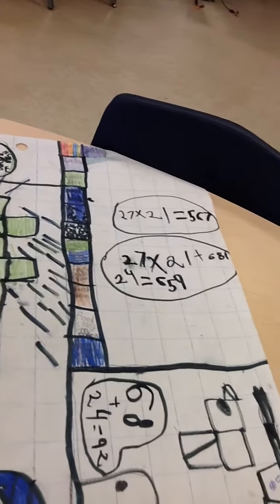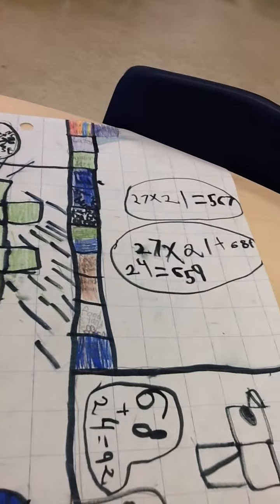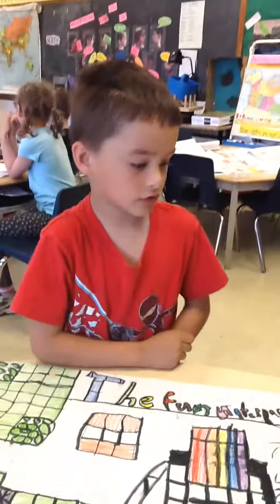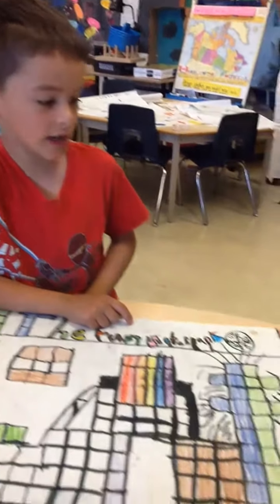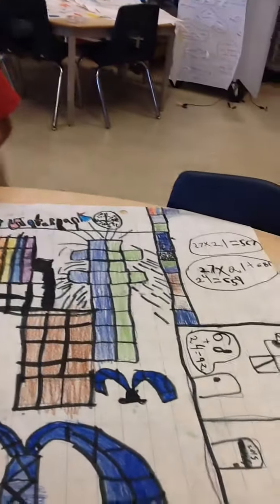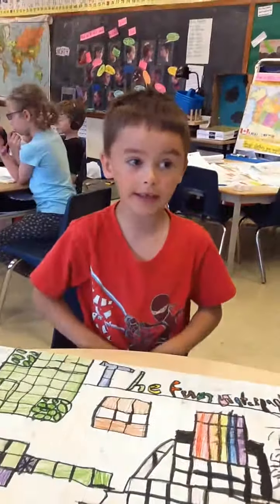I added 68 plus 24 and 27 groups of 21. So 27 groups of 21 plus 68 plus 24 equals 659. This is my water park by Nathan, and this was one of my distinctions.